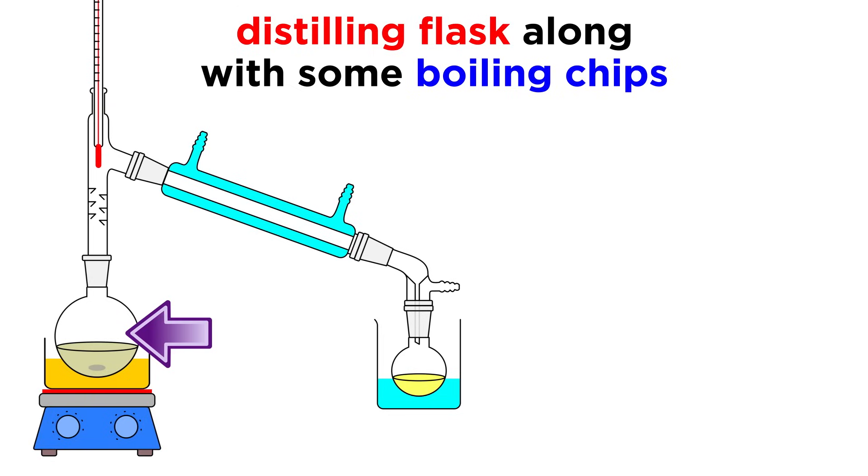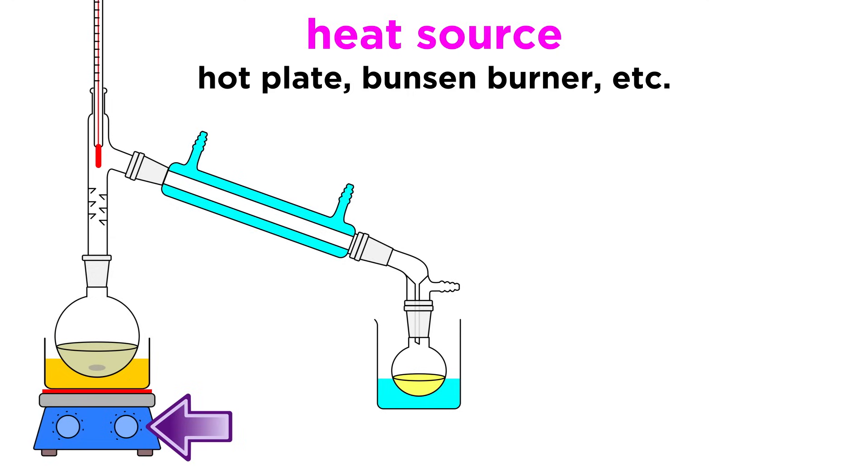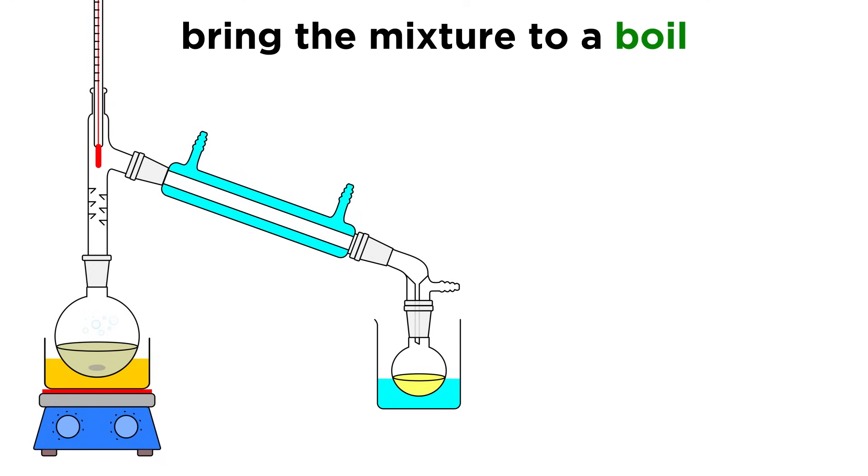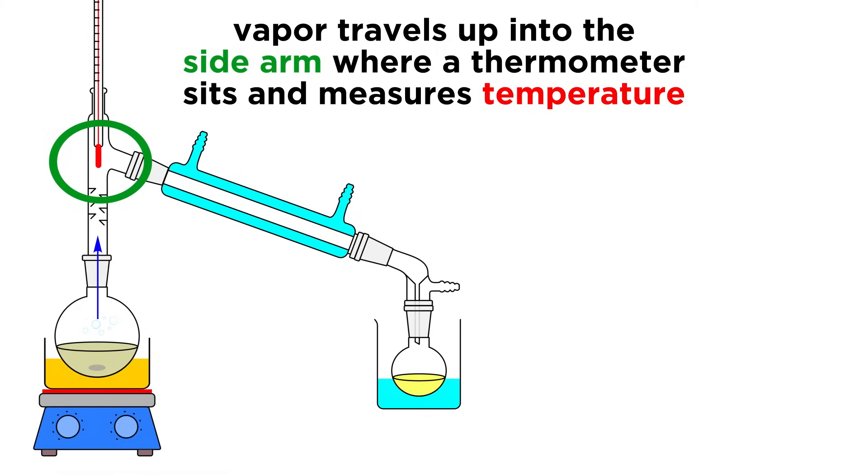Here we can see a distilling flask, usually a round-bottomed flask, and our mixture will go in here, along with a couple of boiling chips. This will sit above the heat source, be it a hot plate, Bunsen burner, or whatever we are using. We bring the mixture to a gentle boil, and vapor is produced. This vapor will rise into the side arm, and a thermometer will sit here, measuring the temperature of vapor right as it approaches this horizontal section.